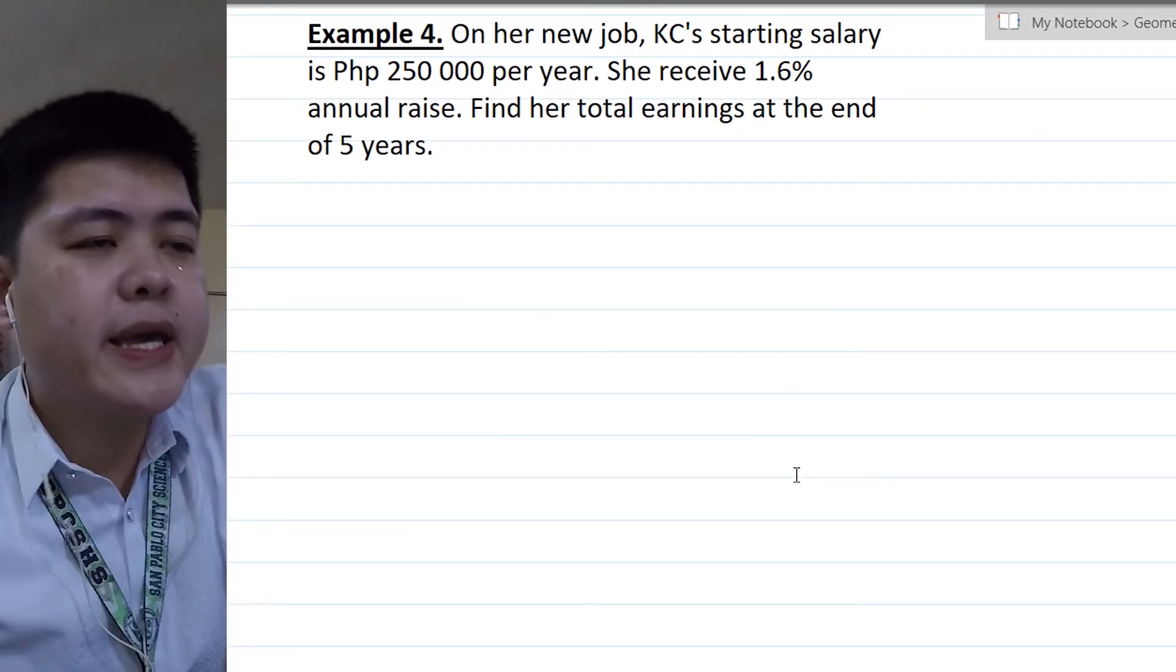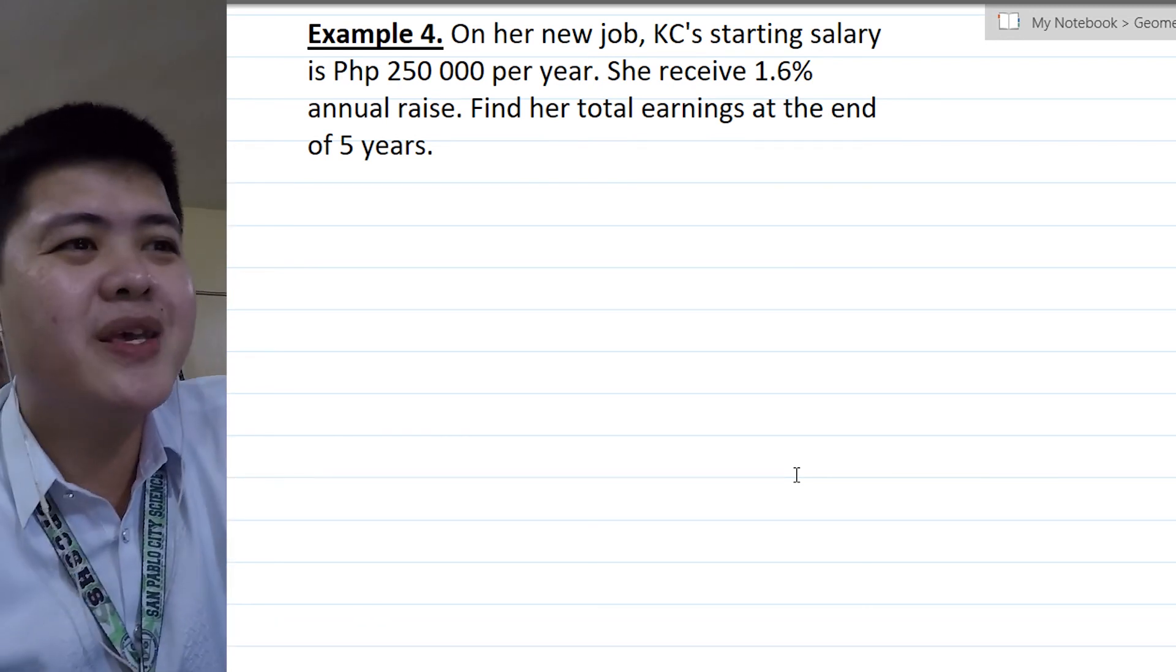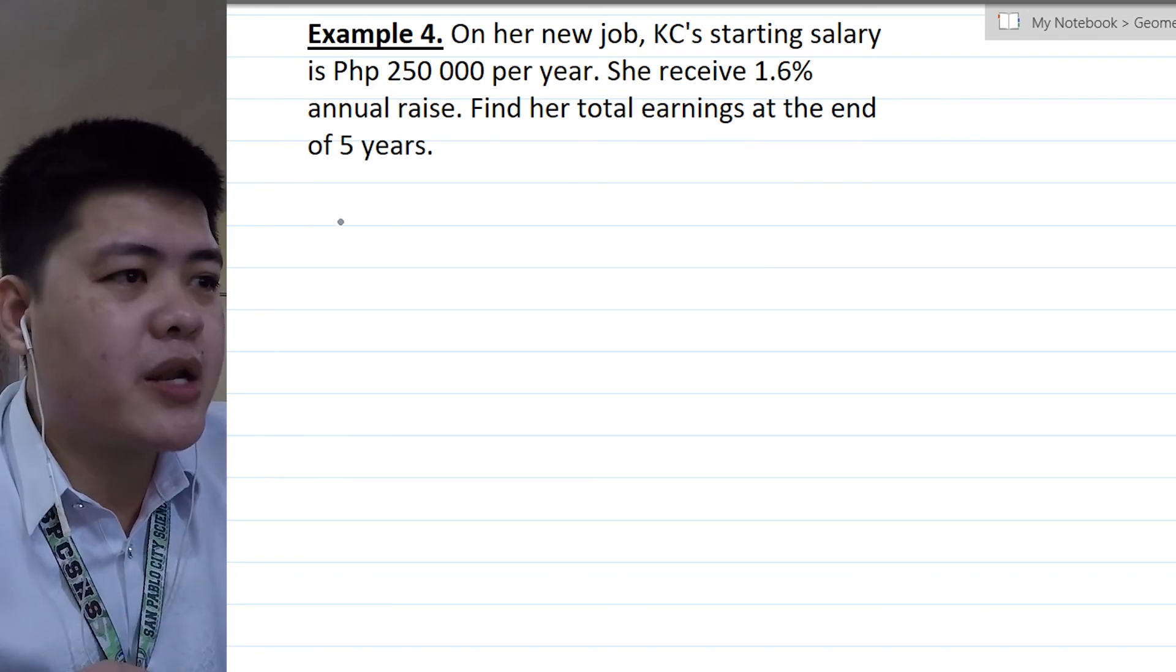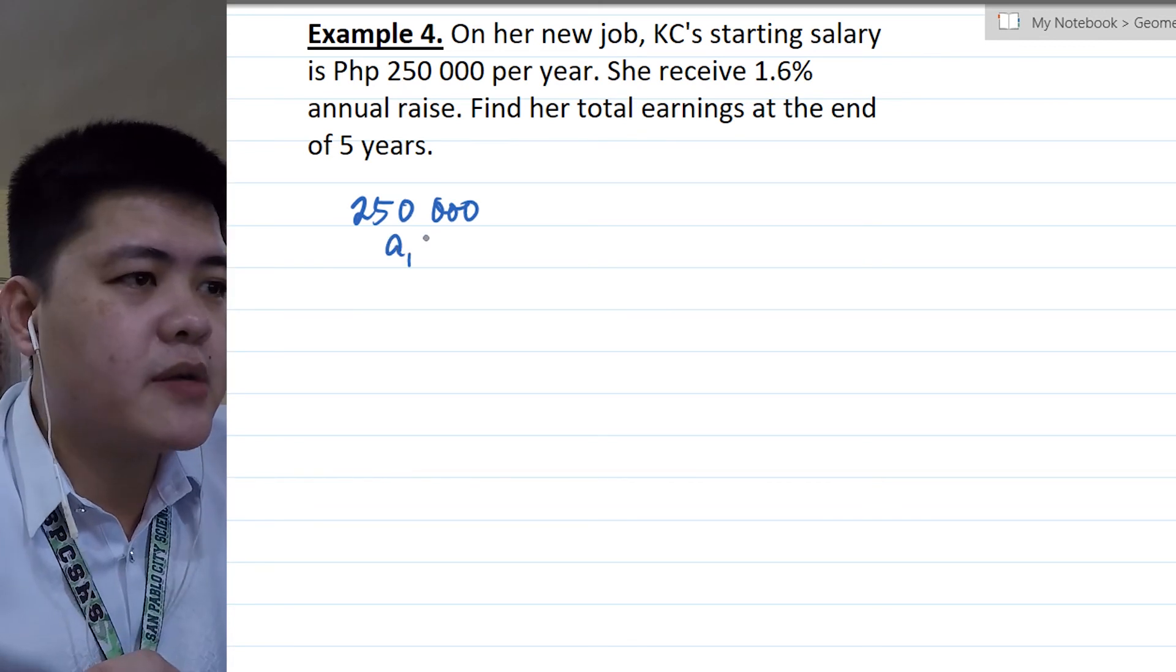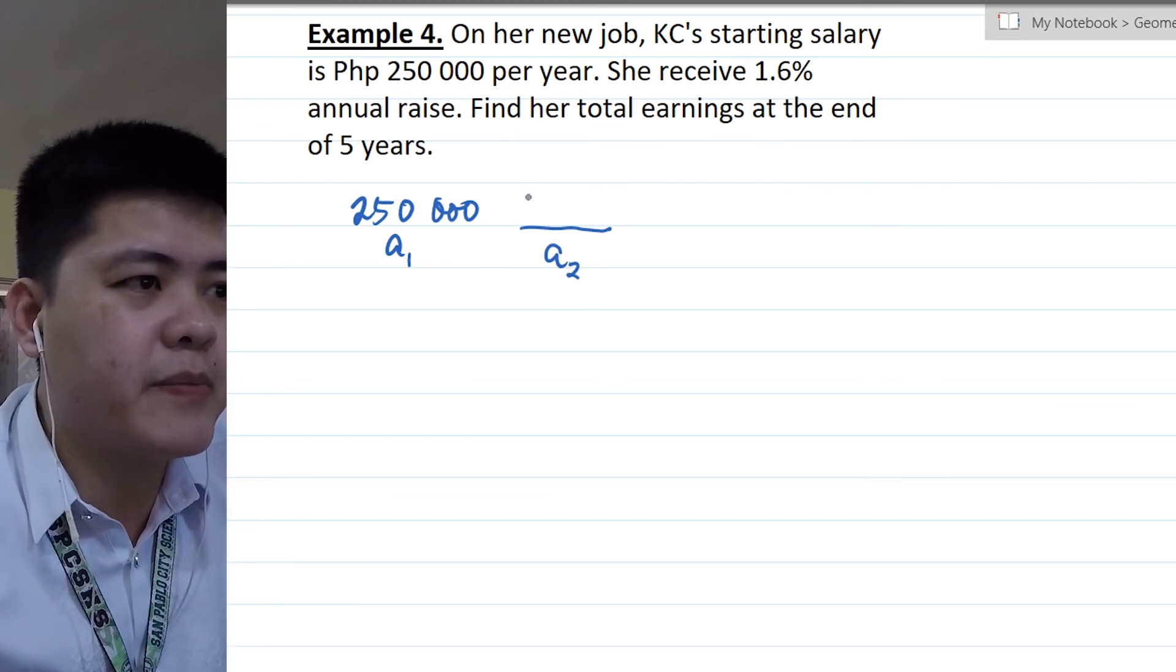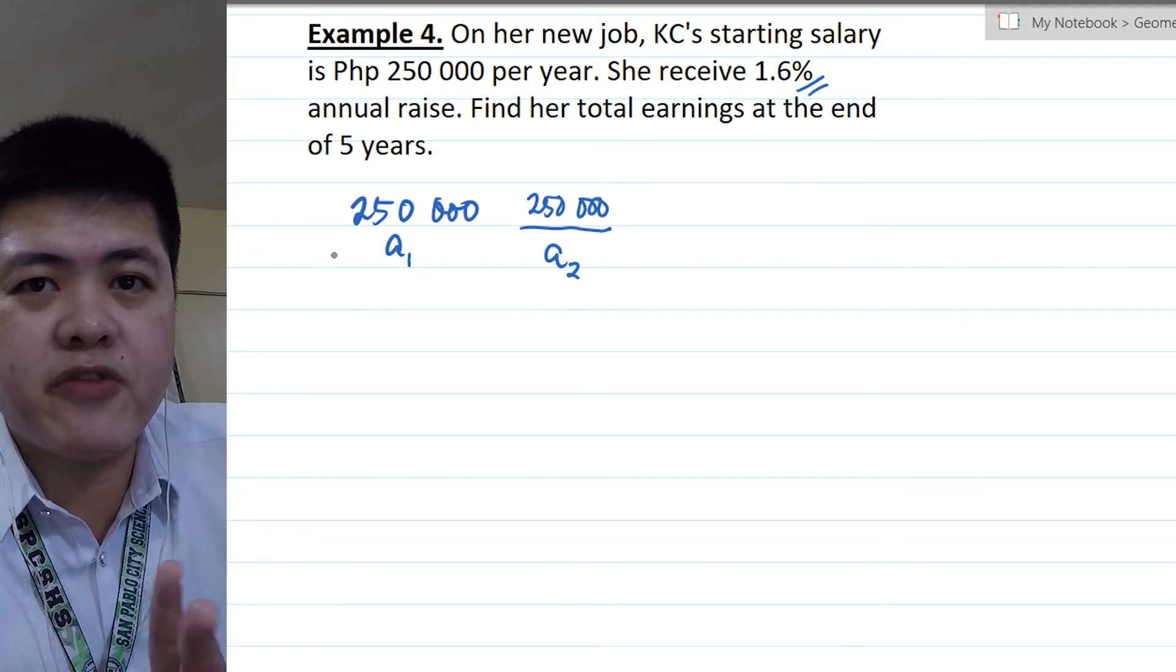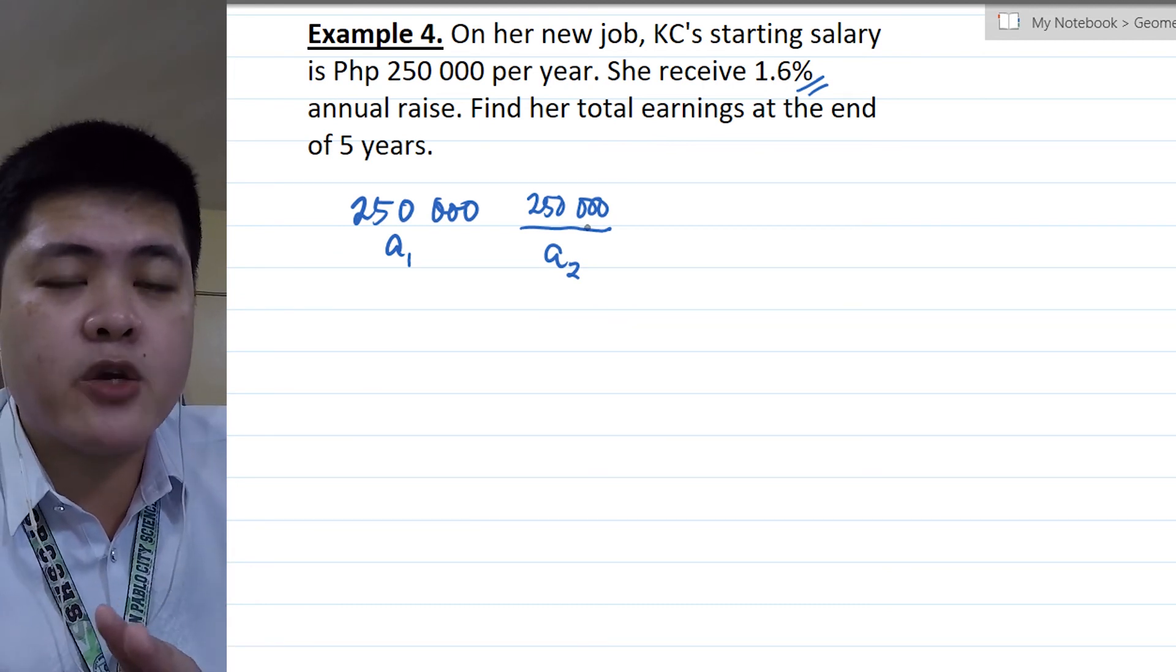Let's have example number 4. On her new job, Casey's starting salary is 250,000 per year. Not per month, per year. She receives 1.6% annual raise. Find her total earnings at the end of 5 years. So at year 1, she has 250,000. This is her salary at A sub 1. Then she'll have a salary at A sub 2, which will become 250,000. So if she has a raise of 1.6%, that means we multiply 250,000 by 1.6% and then add it to 250,000. But we can just multiply 250,000 by 1 plus 1.6%. And 1.6% is 0.016. So we multiply by 1.016.